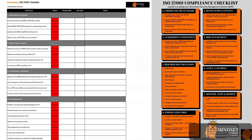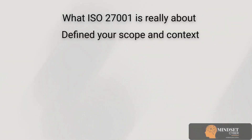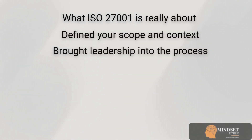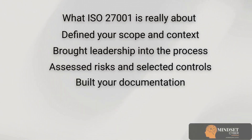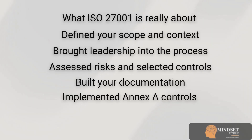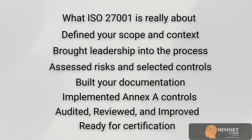That brings us to the end of our ISO 27001 compliance checklist walkthrough. Let's quickly recap the full journey: you've learned what ISO 27001 is really about, defined your scope and context, brought leadership into the process, assessed risks and selected controls, built your documentation, implemented Annex A controls, audited, reviewed, and improved, and finally got ready for certification. These steps don't just get you ready for an audit — they help you build a repeatable, resilient, and risk-driven approach to information security, whether you're a small business starting fresh or a larger team levelling up your governance.